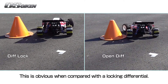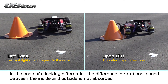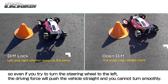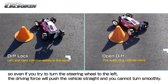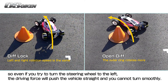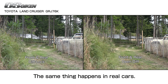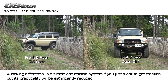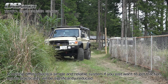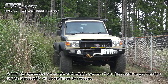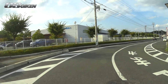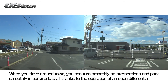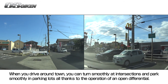This is obvious when compared with a locking differential. In the case of a locking differential, the difference in rotational speed between the inside and outside is not absorbed. So even if you try to turn the steering wheel to the left, the driving force will push the vehicle straight and you cannot turn smoothly. A locking differential is a simple and reliable system if you just want to get traction, but its practicality will be significantly reduced. When you drive around town, you can turn smoothly at intersections and park smoothly in parking lots, all thanks to the operation of an open differential.